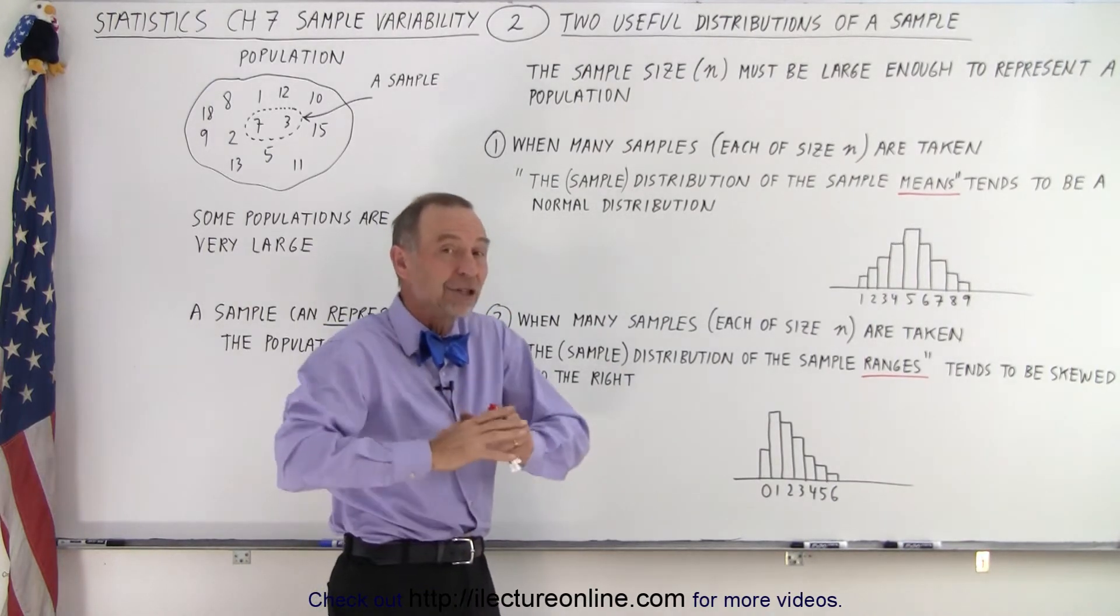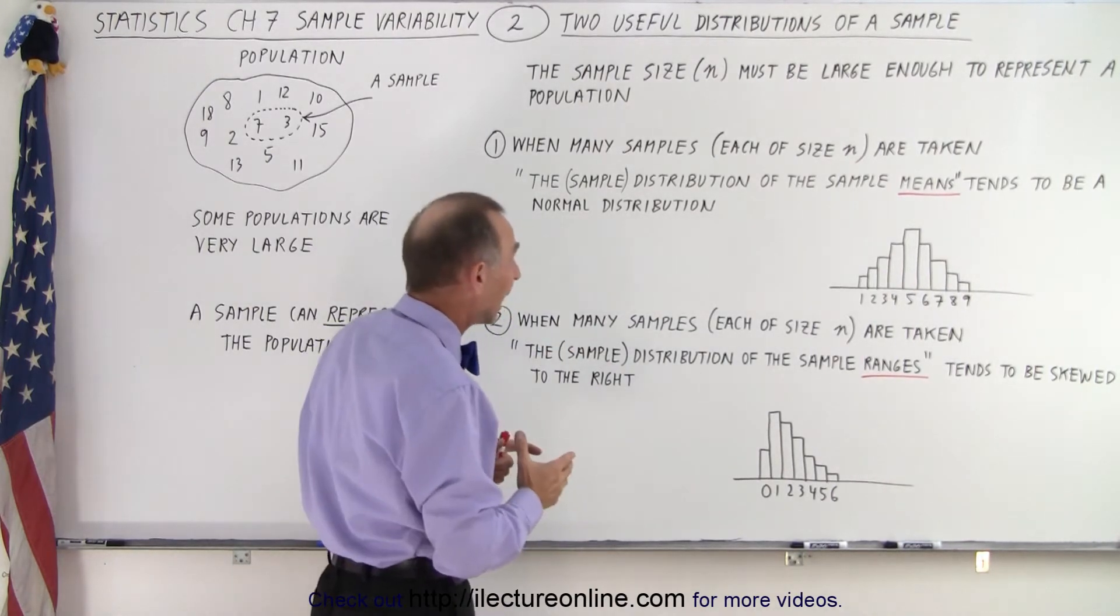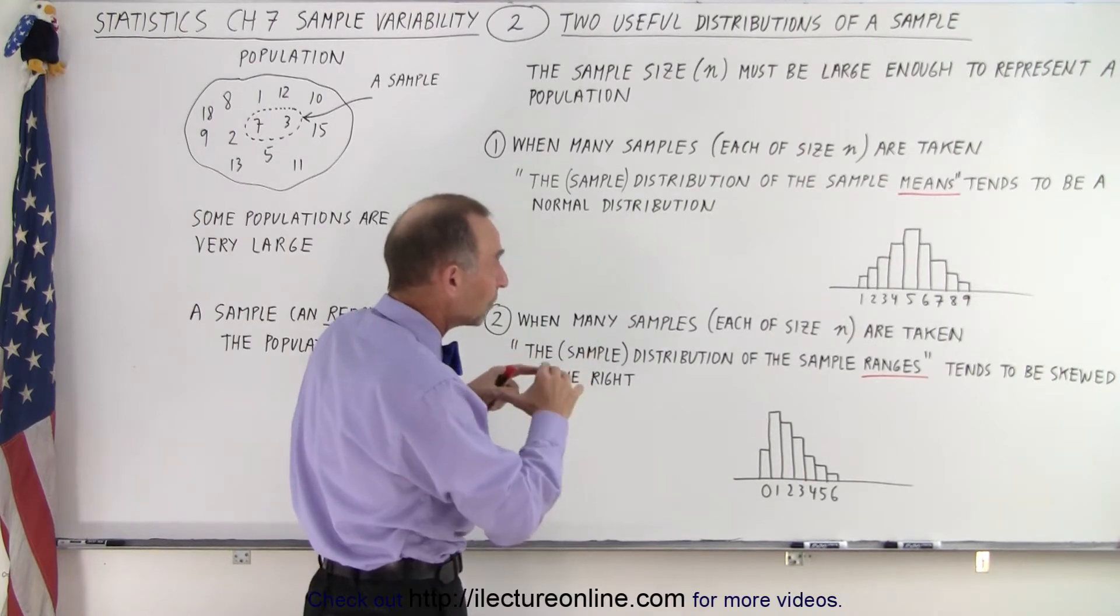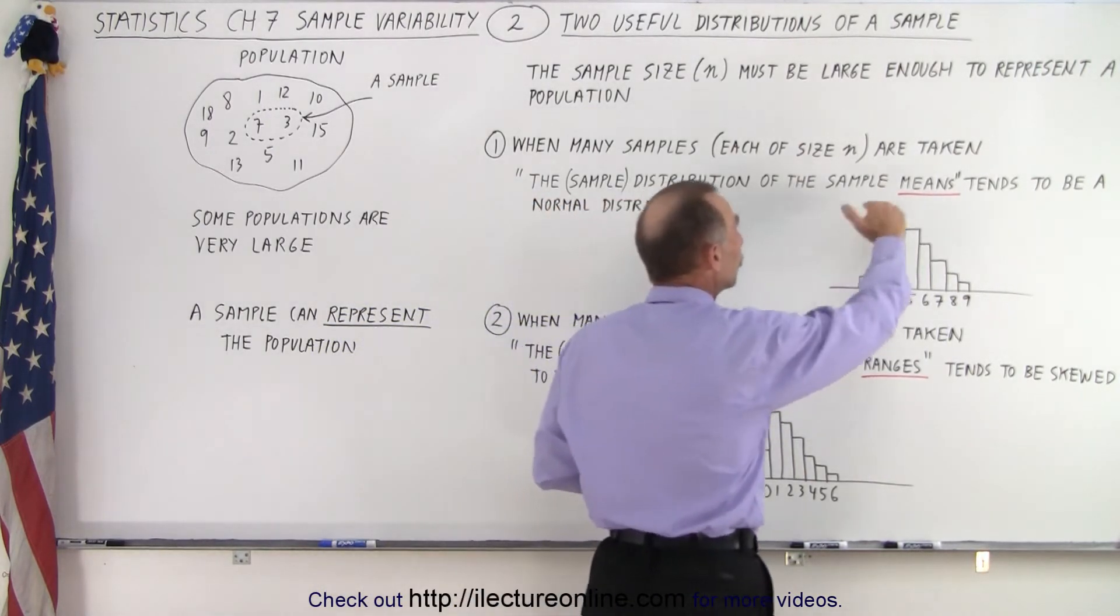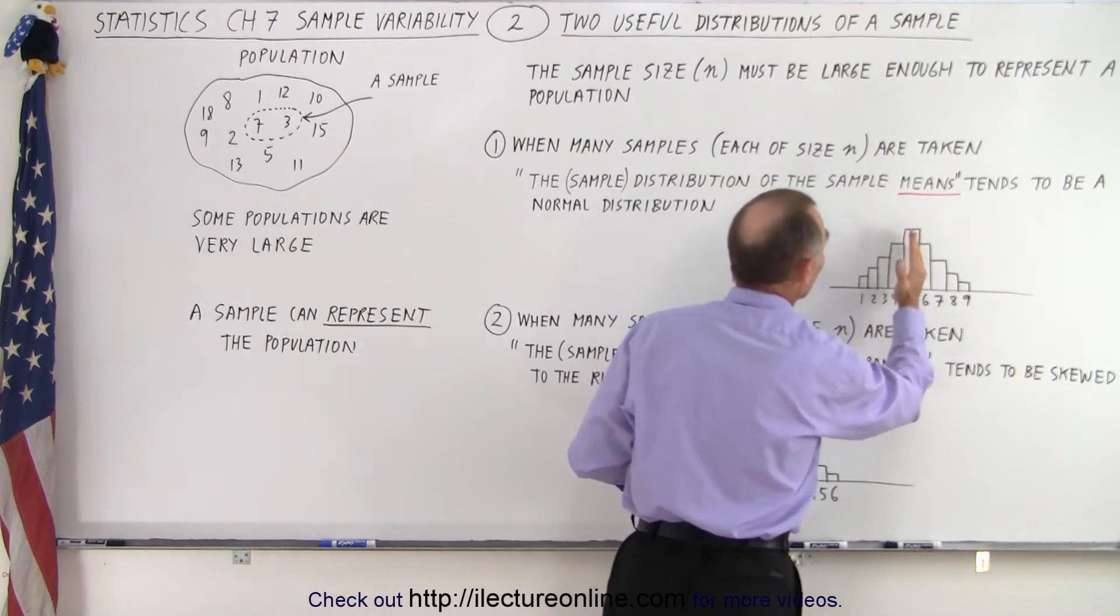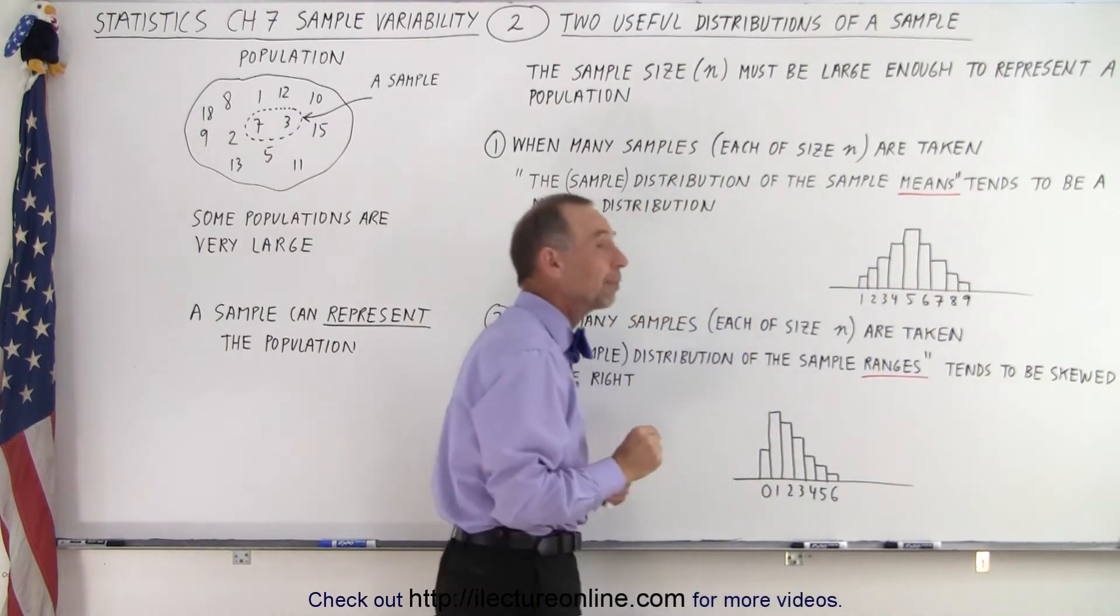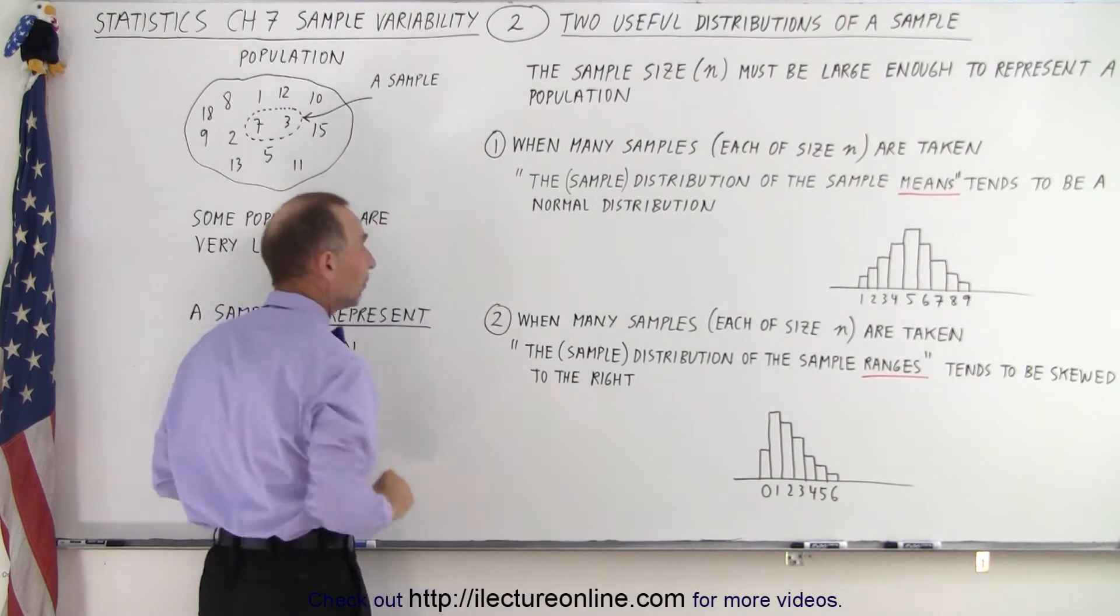Again, if we have enough samples, and they don't have to be large, they can be smaller, but if we take enough samples, we then have a nice distribution and the mean of that distribution will closely represent the mean of the population.